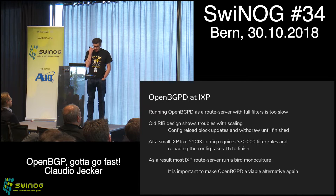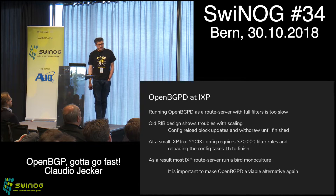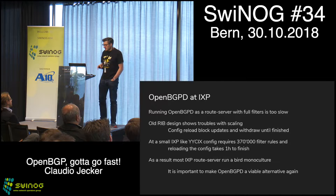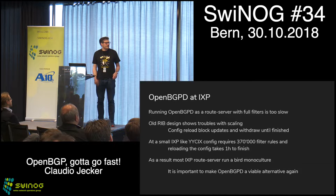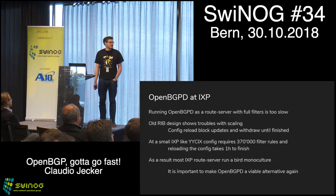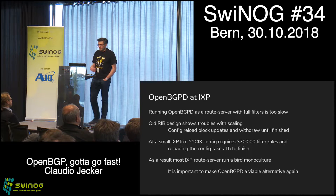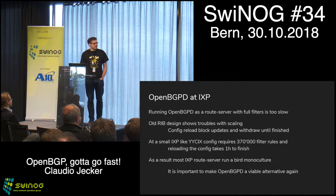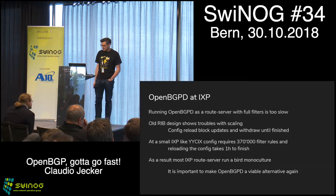Looking into this, we identified that our 15-year-old design is now slowly showing that it's not as great anymore, especially when we consider that 15 years ago the routing table was just above 100,000 routes, and now we're at 700,000–750,000 routes. So there was a lot of growth happening in that time, but we actually didn't change that much inside the code.